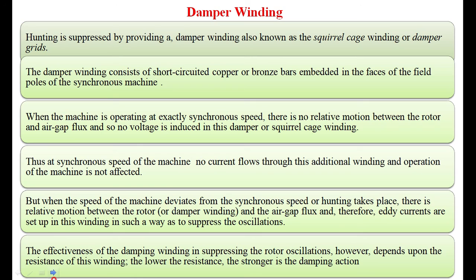The suppressing capacity depends upon the resistance of the winding — the lower the resistance, the stronger the damping action. These damper windings play an important role when there is an oscillation in the rotor: a voltage is induced in the damper winding, producing a damping torque which opposes the oscillation, so that ultimately the rotor settles down to the new operating point.